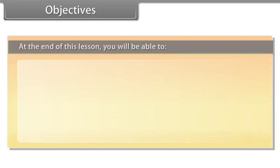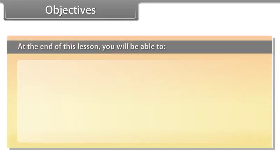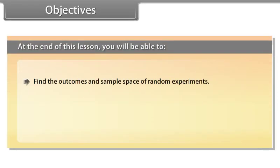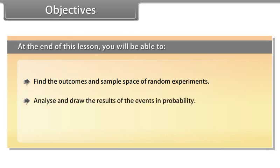Objectives. At the end of this lesson, you will be able to: find the outcomes and sample space of random experiments; analyze and draw the results of the events in probability; and find the probability of events.